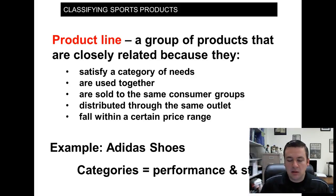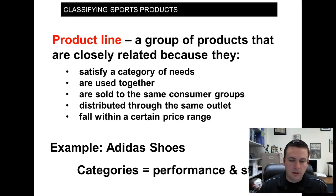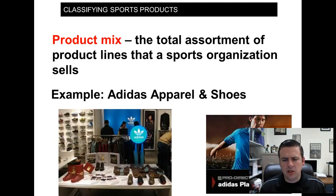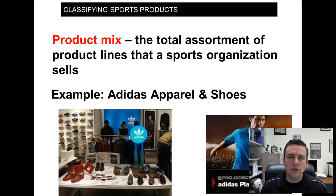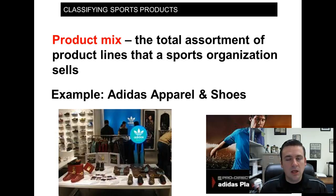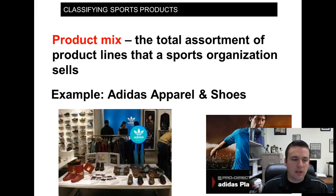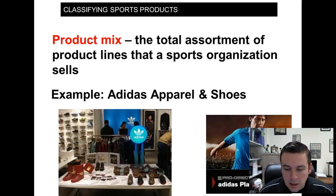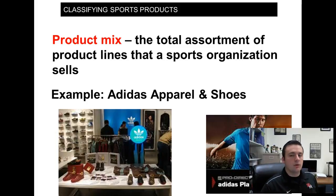For example, Adidas creates a lot of different products, but a product line for Adidas shoes could be performance and style, as opposed to soccer cleats, running, or cross training. The other terminology is product mix — basically the assortment of all the different product lines. Taking all those categories and putting them together, the variety of product lines a company makes is essentially its product mix. Adidas produces apparel, performance shoes, clothing, and so on.